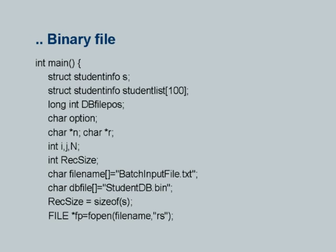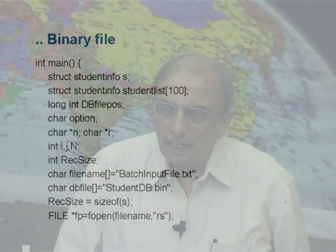Now here is the main program which creates the binary file. It has a whole lot of definitions. First, struct student_info s — this is one typical student, so I want to hold one student's data somewhere — I define this variable called s, and struct student_info says s is of this structure type.